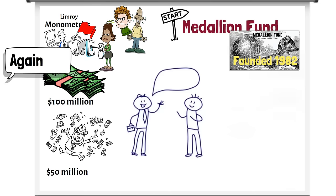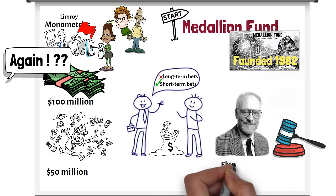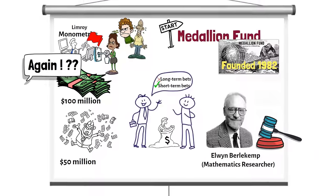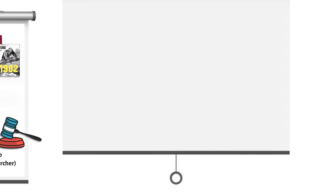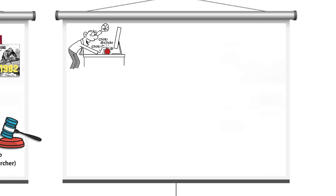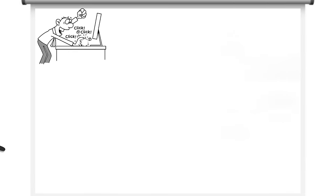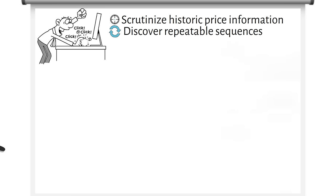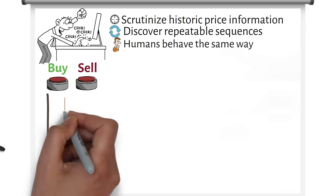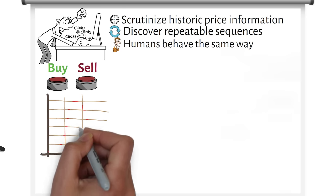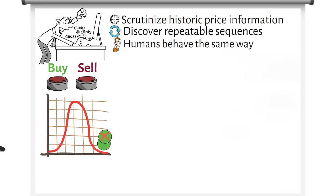Soon after, Simons and Axe had a falling out as Axe focused more on long-term bets, which were cash guzzlers, while Simons advocated short-term bets. Axe sold his stake to Elwin Berlekamp, a mathematics researcher who had been working with Axe for some time. Berlekamp always advocated for short-term trading and committed himself to the firm's short-term trading models. The goal remains the same: scrutinise historic price information to discover sequences that might repeat, under the assumption that investors will exhibit similar behaviour in the future. The idea was to trade frequently with a slight statistical edge. Rather than having a few big winners, have many small winners and even smaller losses. The law of large numbers would be on the fund's side, just as it is for casinos.